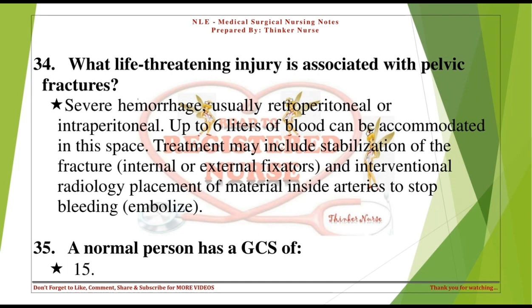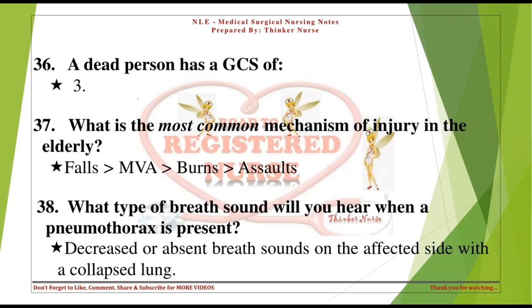A normal person has a GCS of 15. A dead person has a GCS of 3.